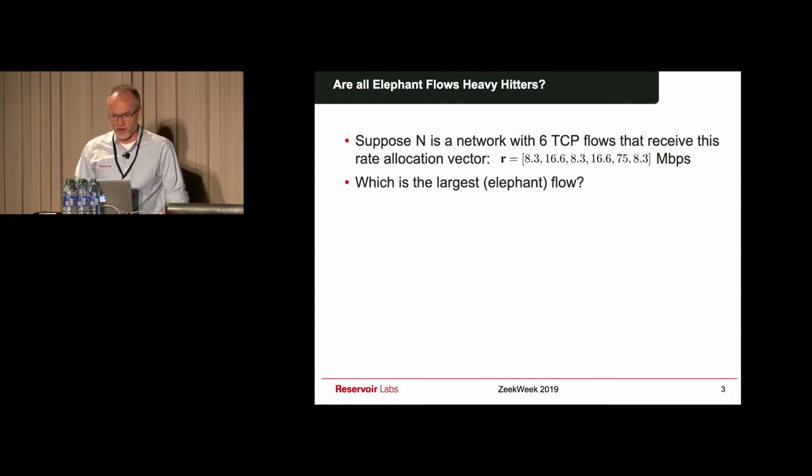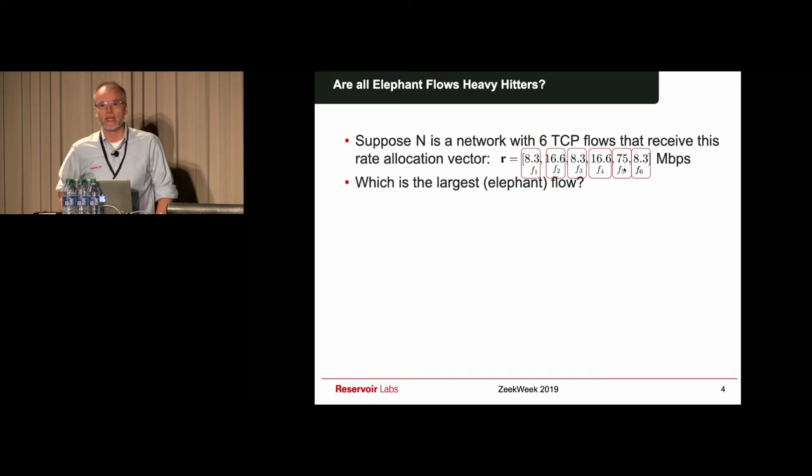The traditional sort of conventional wisdom on this question has been that you have to look at the heavy hitter flow, also called the elephant flow. What you would do here is basically say, clearly flow number five is taking the highest bandwidth, 75 units, which is significantly more than the second flow.